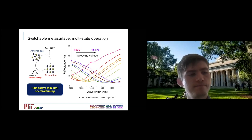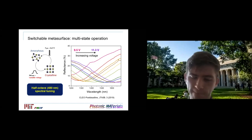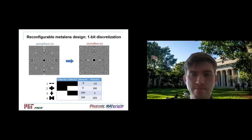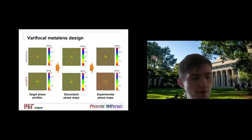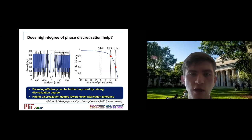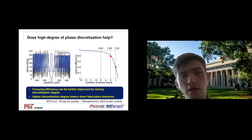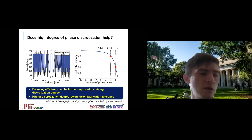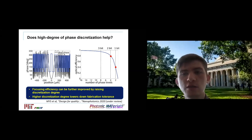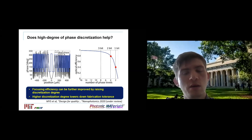Carlos asks what limits the 24% focusing efficiency. The main factors are: phase discretization losses, material absorption losses, and primarily scattering — light scatters back or in unintended directions. We are actively working to improve this.